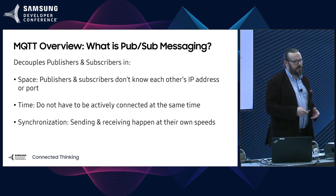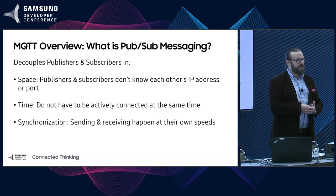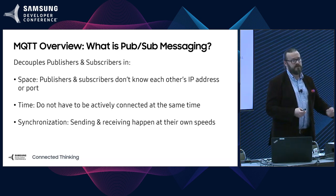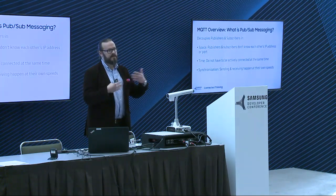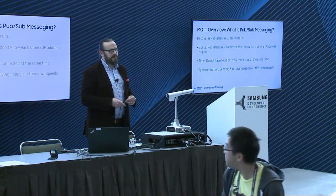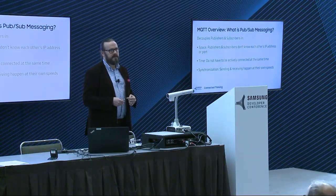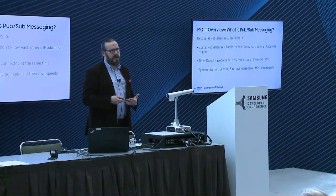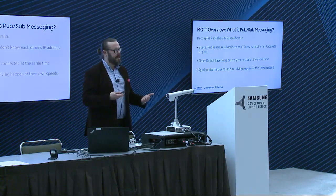PubSub messaging does three things: it decouples you in space, time, and synchronization. Publishers and subscribers don't have to know each other's IP addresses and ports. They don't have to be online at the same time — say a connected vehicle goes through a tunnel, but you've sent a message to it with a weather alert; when it comes out of the tunnel, it'll automatically receive that message. The sender and receivers also don't have to work at the same speed — the publisher can publish as fast as he wants, and subscribers can receive data as fast as they can consume it.